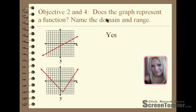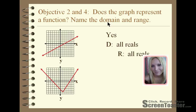For thinking about domain and range — for domain, think about if there are restrictions on the x values that the graph takes on. For this first one, you can see that the graph goes to the left and to the right, indicated by the arrows, with no restriction. Therefore, the domain — the acceptable x values the graph can take on — would be all real numbers. The range would also be all real numbers, because the graph is going down and up with no restrictions, so the graph would take on all y coordinates.